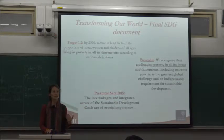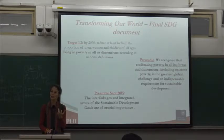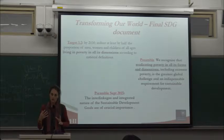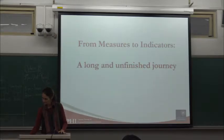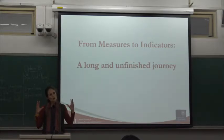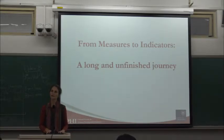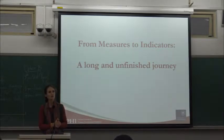There is recently an inter-agency expert group on interlinkages between SDGs, and clearly multidimensional poverty will be part of those discussions. That is the framework we have inherited in the SDGs. From that, how do we move to the indicators?